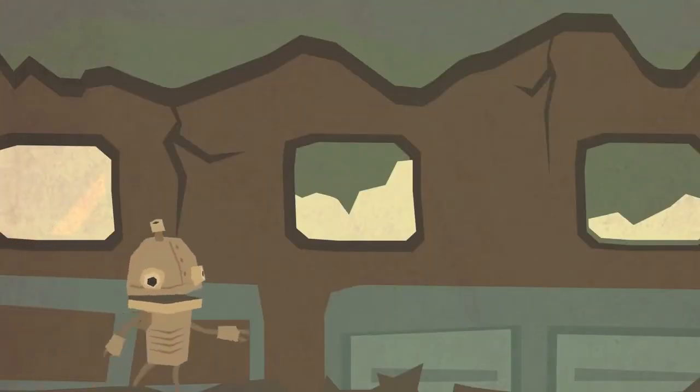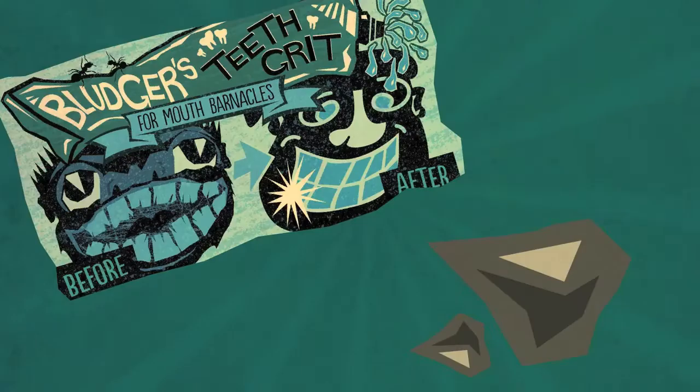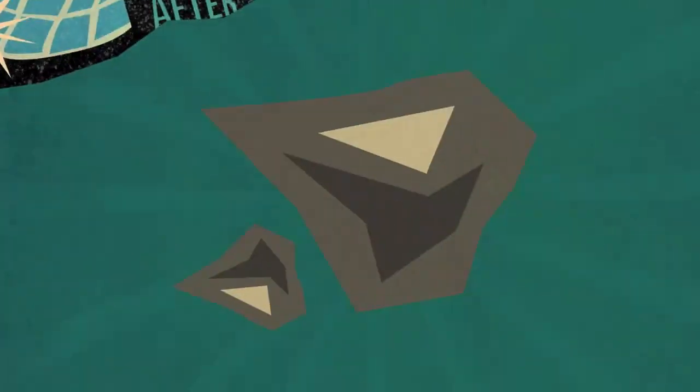But our hero fended off his fears and began to furiously frisk drawers for fire fodder. Joseph cautiously entered the cookery, where he happened to happen upon a bag of bludger's teeth grit and a fragment of flaky flint.